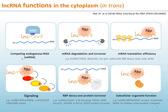By partnering with lncRNAs, RBPs regulate target mRNA degradation and turnover, and mRNA translation efficiency. lncRNAs with RBPs can also function in cell signaling, such as kinases decoy-ing RBPs from target mRNAs, RBP protein turnover, or nuclear-cytoplasmic-mitochondrial organelle transport.